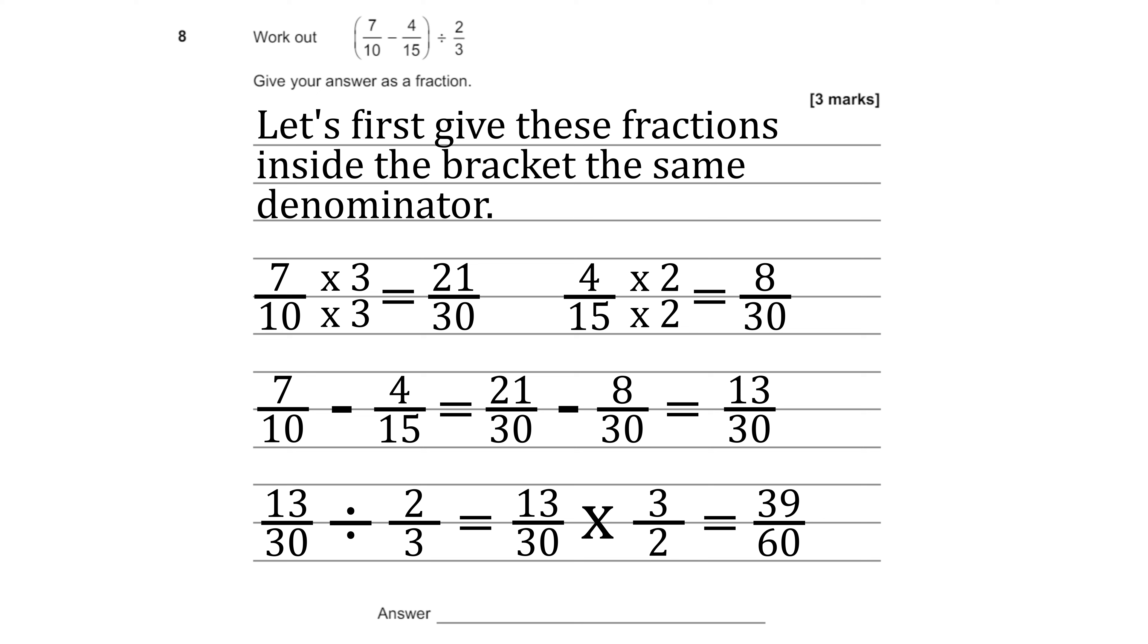So on top we're going to have 39 and on the bottom we have 60 so our fraction is 39 over 60 and then if we divide top and bottom by 3 that will be 13 over 20. I don't think it asks us to simplify but I decided to simplify anyway. So our final answer will be 13 over 20.